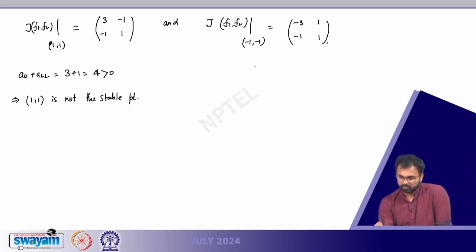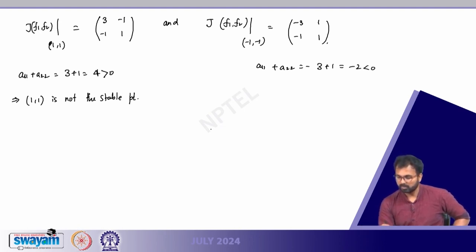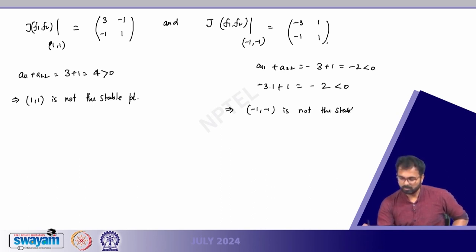We still have to check the determinant for (−1, −1). The determinant is (−3)(1) − (1)(−1) = −3 + 1 = −2, which is also less than 0. Since the determinant is negative, (−1, −1) is also not a stable point — it leads to an unstable equilibrium.